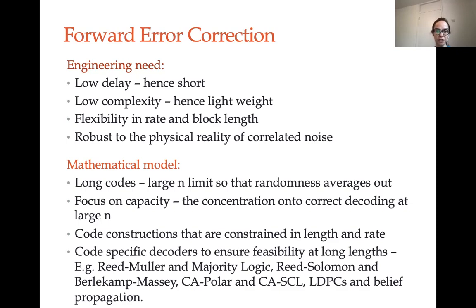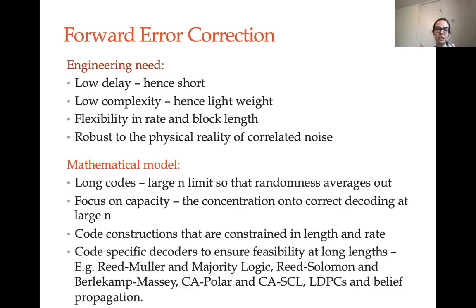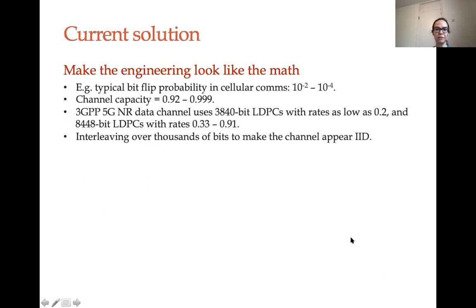The focus is often on capacity, concentrating on correct decoding. We generally have code constructions that are quite constrained in length and rate. And very importantly for today's lecture, we generally have code-specific decoders. For instance, you have famous efficient codes such as Reed-Mueller with majority logic decoding, Reed-Solomon, Berlekamp-Massey, CRC-aided polar codes with CRC-aided successive cancellation list decoding, and low-density parity-check codes with belief propagation. By and large, the decoder is suited and designed for a particular encoder — and often even for a particular rate for that type of code. It tends to be both code-specific and rate-specific.